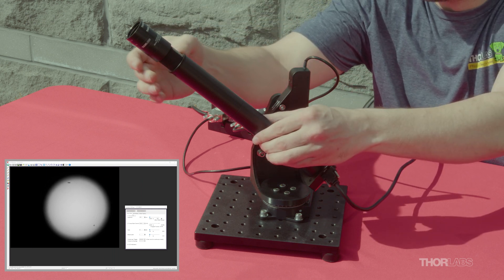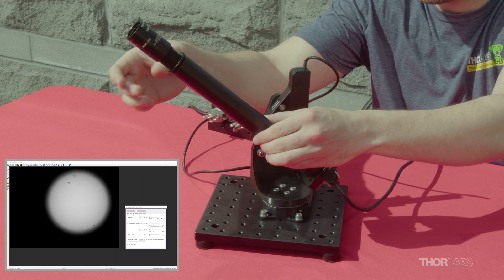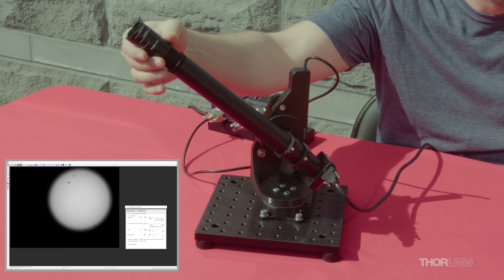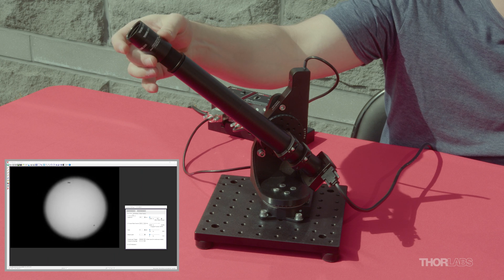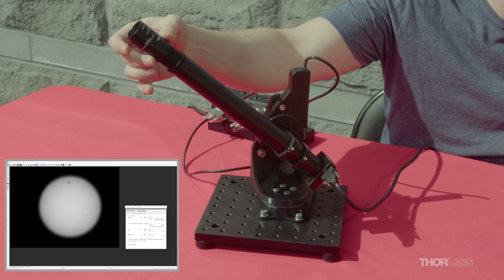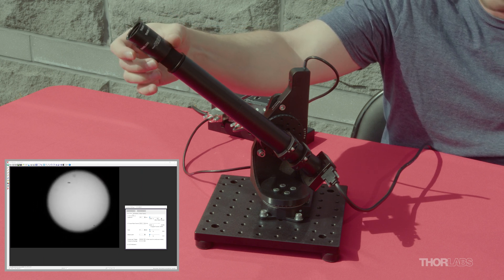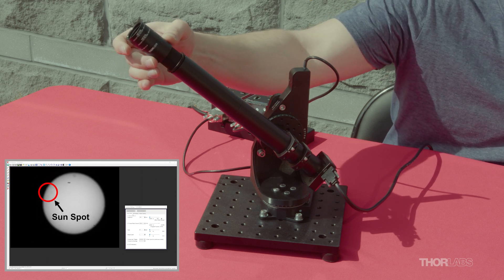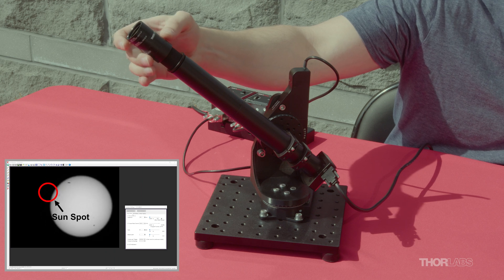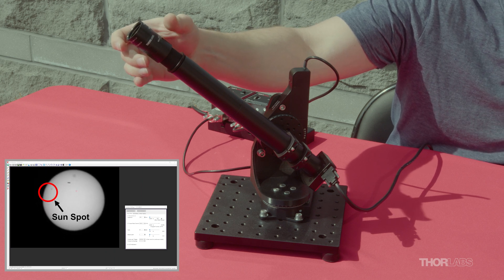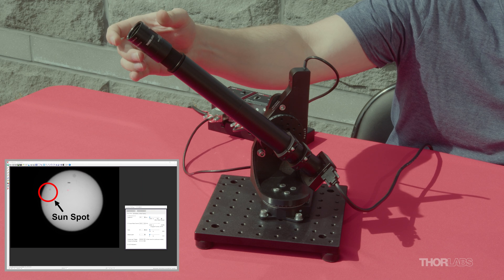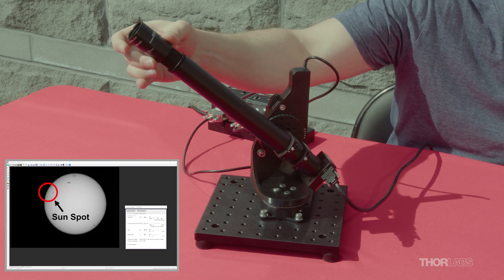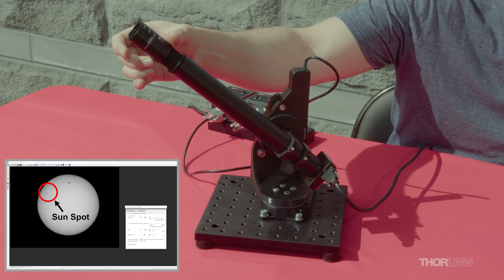Now that we're tracking the sun on target, I'll loosen the lockring and adjust the focus to the sun. Using the visible sunspots, I'll adjust the focus to the highest contrast. And that looks good to me.